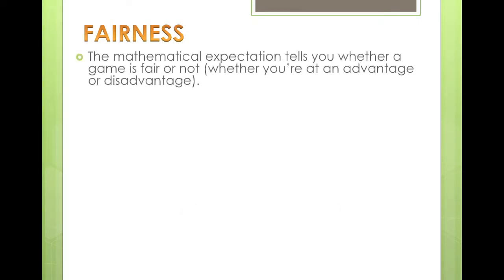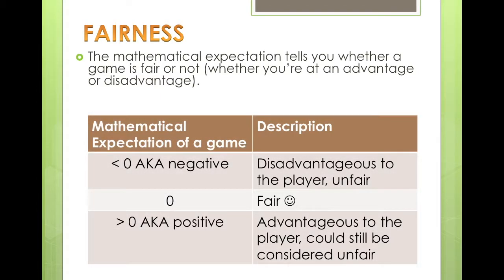Now let's talk about fairness. The mathematical expectation tells you whether a game is fair or not — whether you're at an advantage or a disadvantage. If your mathematical expectation is less than zero, it is disadvantageous to the player and unfair. If it equals zero, the game is fair. If it is greater than zero, it is advantageous to the player, but could still be considered unfair because you have an advantage over the other person or the game.